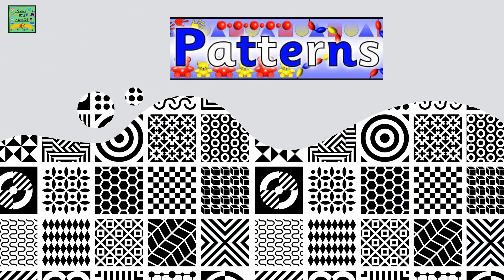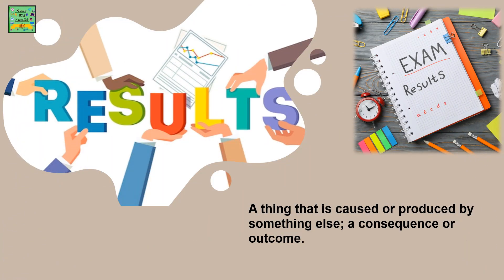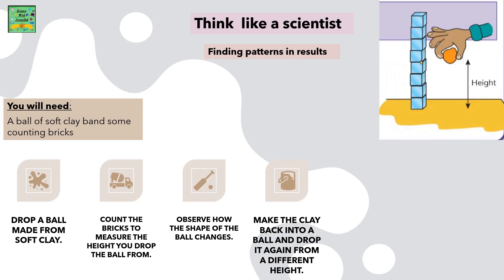These are the types of patterns. Results: a thing that is caused or produced by something else; a consequence or outcome. Shapes. Think like a scientist: finding patterns in results.